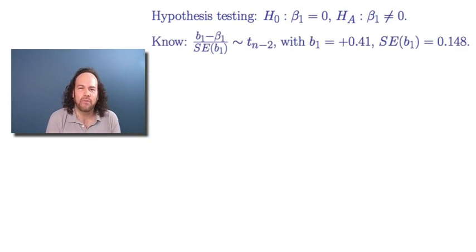Well, remember what we know. We know that if you take the observed B1 minus the true value beta 1 and divide by that crazy standard error for B1, that has approximately a t distribution with n minus 2 degrees of freedom. And we already know that in this case the B1 was plus 0.41, and what we just worked out was that that standard error of B1 from that crazy formula was equal to 0.148.